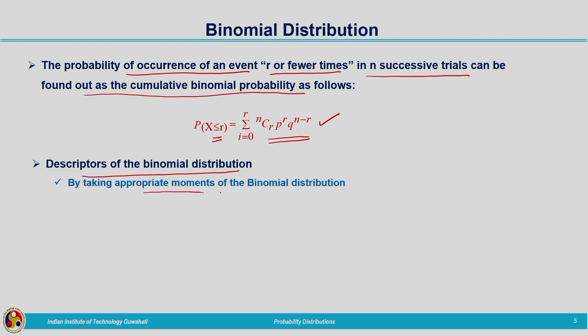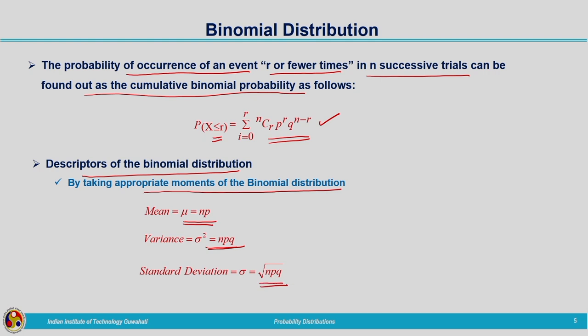Now let us look at the descriptors of the binomial distribution. By taking appropriate moments of the binomial distribution we can get the descriptive statistics. The mean of the binomial distribution mu is given by N times P, variance sigma squared is N times P times Q, and standard deviation sigma is the square root of variance, that is the square root of N times P times Q.